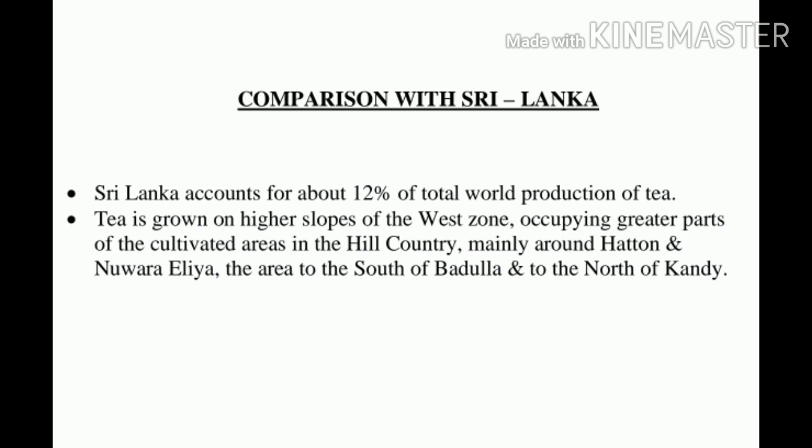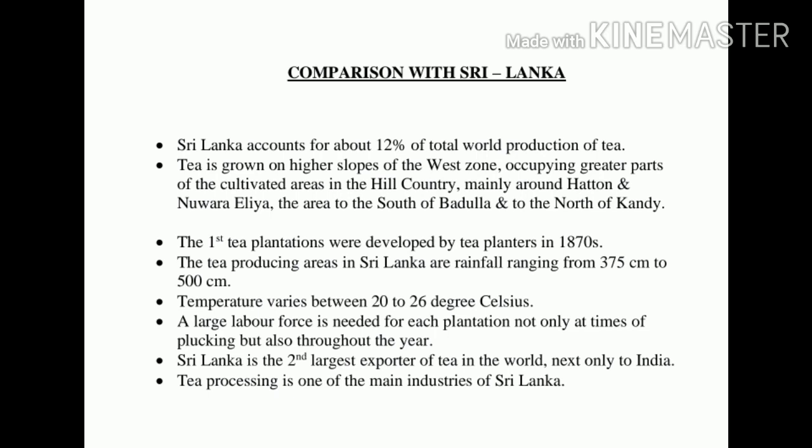Comparing with Sri Lanka, Sri Lanka is the third largest producer of tea after India and China and accounts for about 12% of total world tea production. Tea is grown on higher slopes of the west zone, occupying the greater part of the tea-cultivated area in the hill country, mainly around Hatton and Nuwara Eliya, the area to the south of Badulla and that to the north of Kandy. Tea plantations occupy about 240,000 hectares of land, which is about one-fourth of the total cropped area of the country. The first tea plantations were developed by British planters in the 1870s in upland areas about 1,000 meters in altitude. The tea-producing areas in Sri Lanka have rainfall ranging from 375 to 500 centimeters and temperature varies between 20 and 26 degrees Celsius.